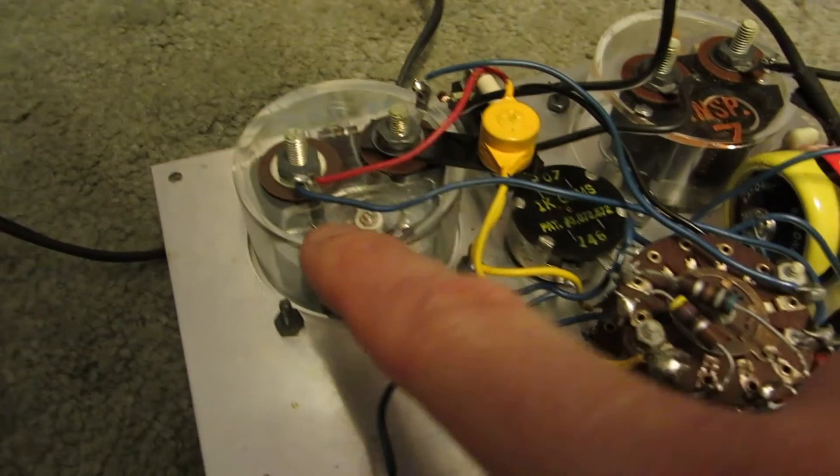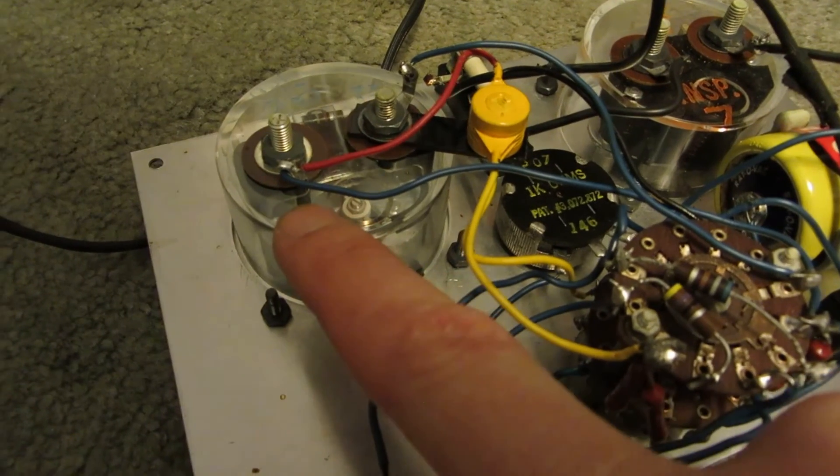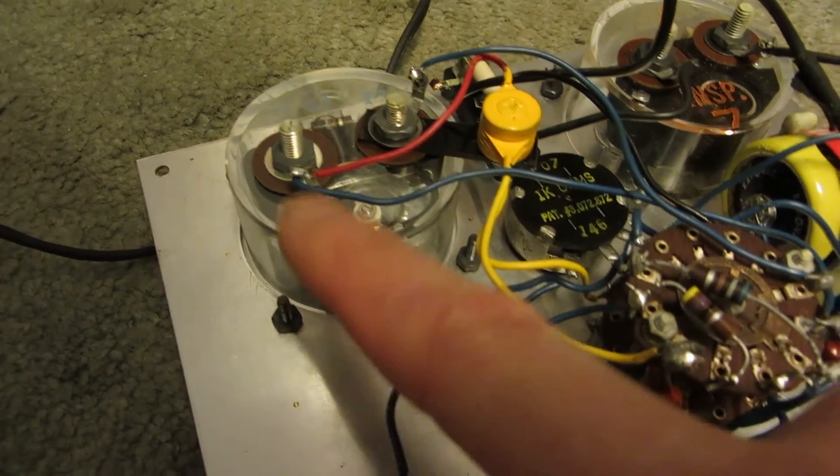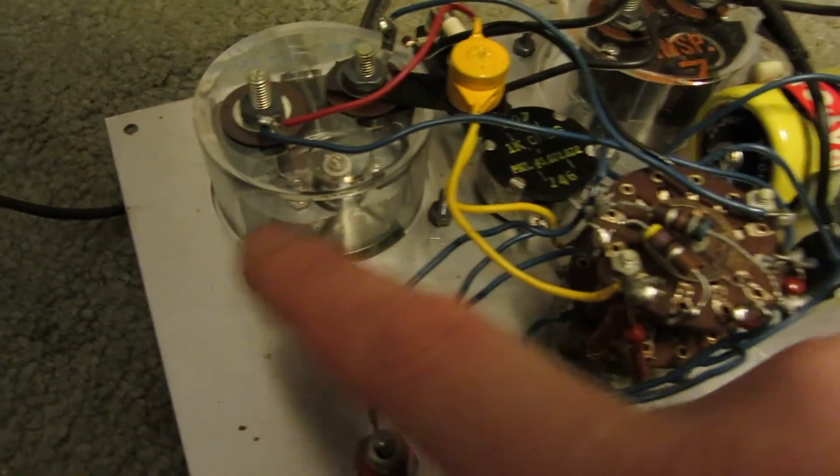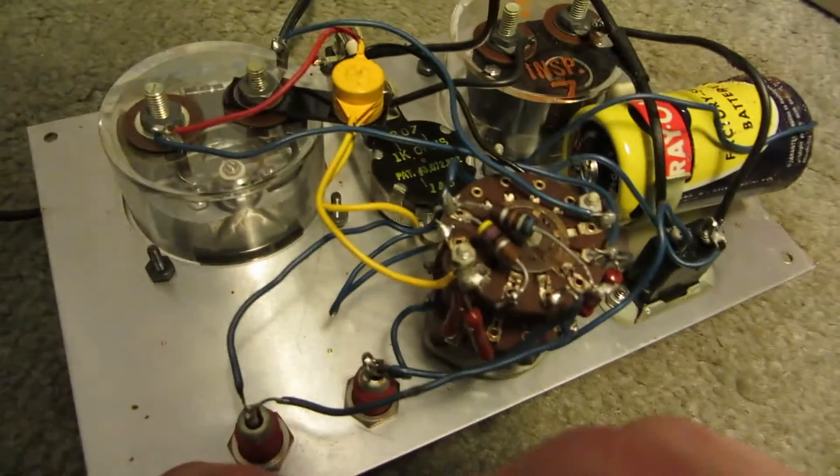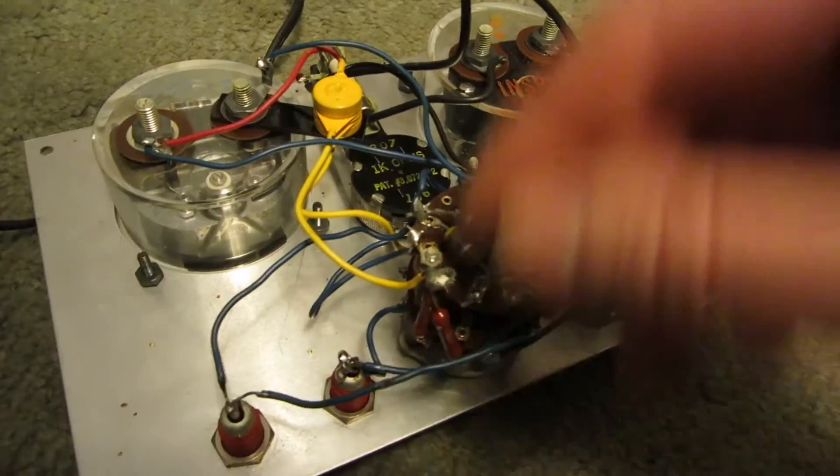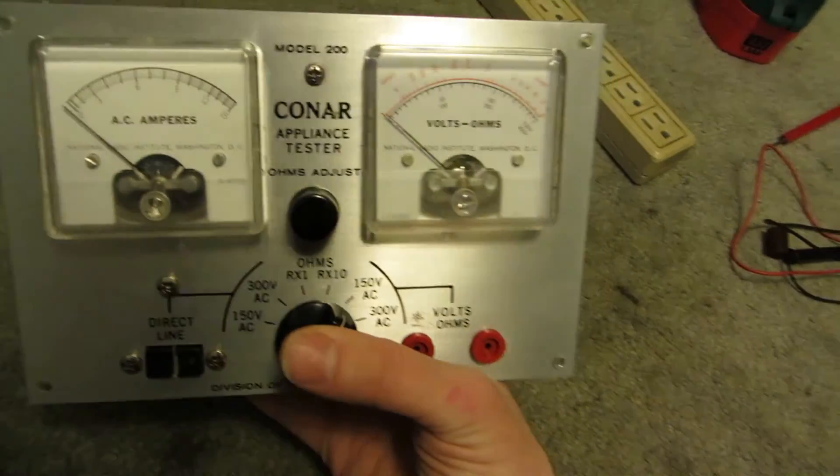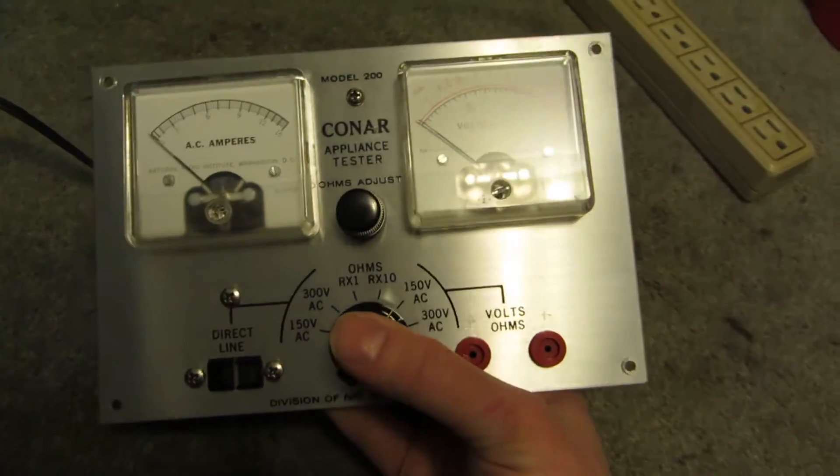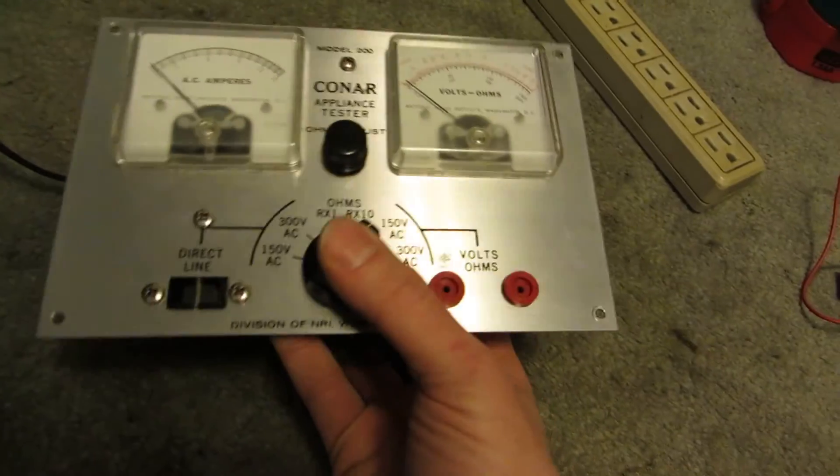Unless this meter runs off of DC. But I can't see that. All right. Well, that is a Conar Model 200 appliance tester. Neat stuff and old. Thanks for watching.